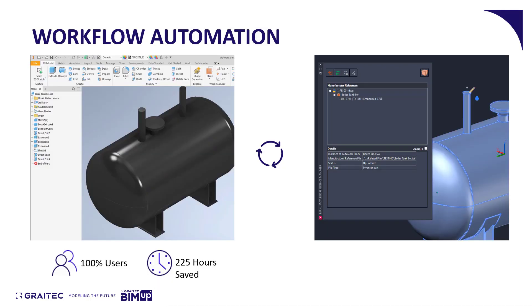Jumping straight into the tools — we have the Manufacturer Reference tool. When working on a plant project, equipment is often supplied in various file formats. We might use Inventor to edit files, or more than likely the manufacturer themselves is supplying their Inventor files, their SolidWorks files, their CATIA files. The Manufacturing Reference tool links that data in intelligently, and once we've converted the block to a piece of equipment and created our pipe connectors, if something changes we no longer have to start again.